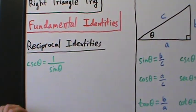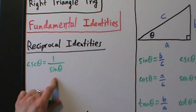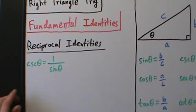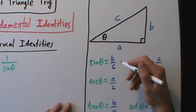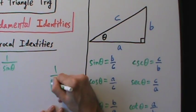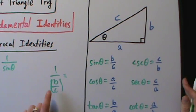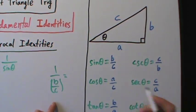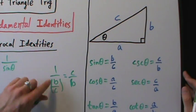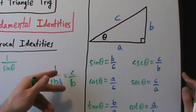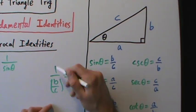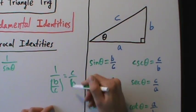To get the reciprocal of something, you take 1 and divide by that thing. So the reciprocal of sine of theta is 1 over sine of theta. If you take 1 over B over C, you're dividing by B over C, so you're multiplying by C over B — that's C over B. And that's the cosecant of theta. So 1 over sine of theta is the cosecant of theta.